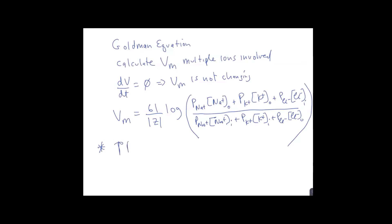For example, a key point is, if you increase the permeability of a given ion, what that means is that the membrane potential approaches the equilibrium potential for that ion.